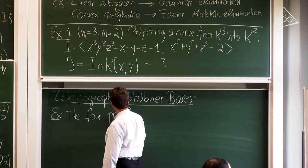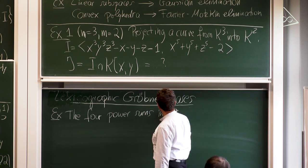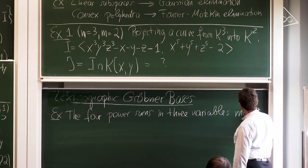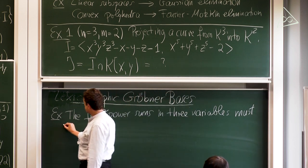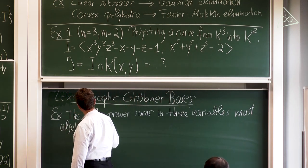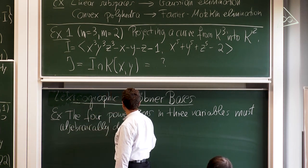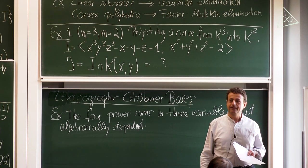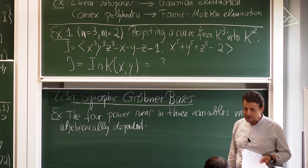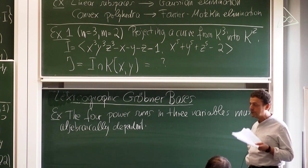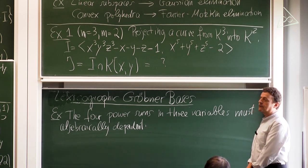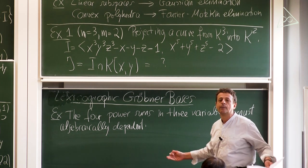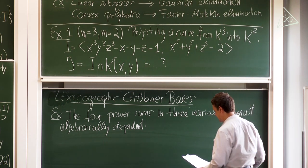Let's do another projection example: the first four power sums in three variables — x+y+z, x²+y²+z², up to x⁴+y⁴+z⁴. Basic field theory tells us that if you have four polynomials in three variables, there must be some non-trivial algebraic relation. The question is: what is their algebraic relation?